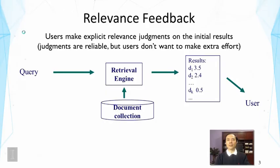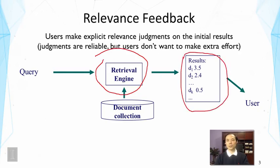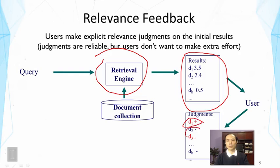This is a diagram that shows the retrieval process. We can see the user typing in a query, which is sent to a retrieval search engine. The engine returns results that are shown to the user. After seeing the results, the user can make judgments — for example, this document is good, this one is not very useful, this one is good again. This is called a relevance judgment or relevance feedback.